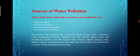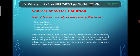Sources of water pollution: Some of the most commonly occurring water pollutants are domestic waste, industrial effluents, insecticides and pesticides, detergents and fertilizers. Some water pollution is caused by direct sources such as factories, waste management facilities, refineries, etc., that directly release waste and harmful by-products into the nearest water sources without treating them. Indirect sources include pollutants that enter water bodies via groundwater, soil, or via the atmosphere as acid rain.